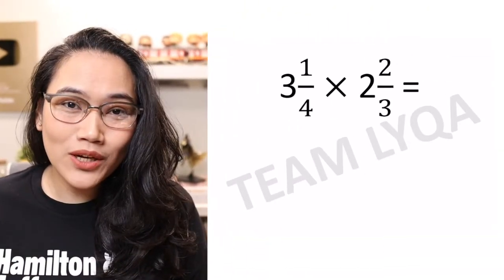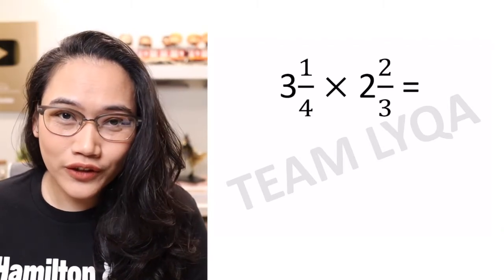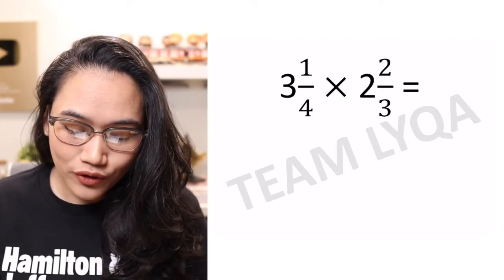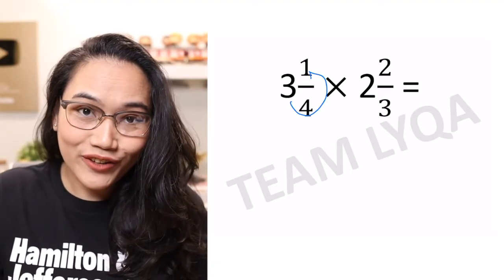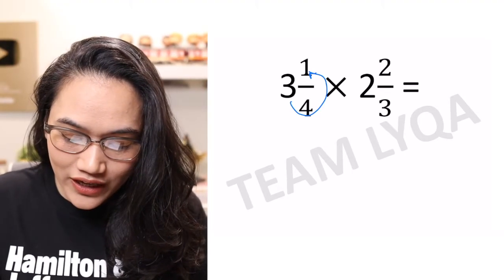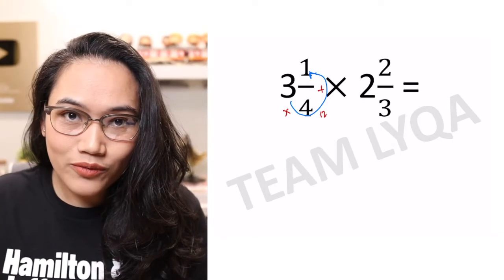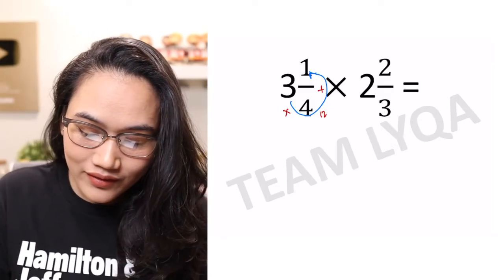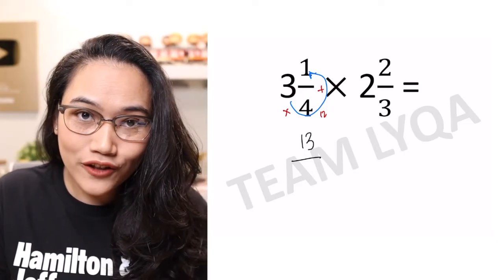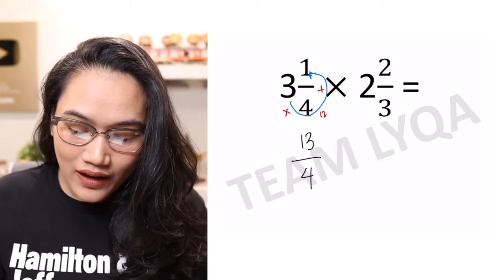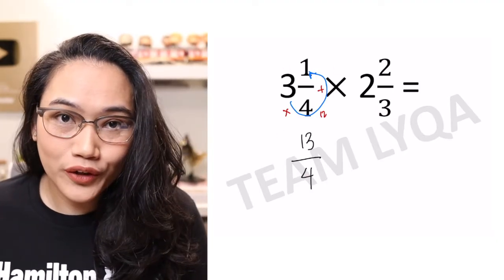When multiplying mixed numbers, the first thing we need to do is to transform them into improper fractions first. So if you have 3 and 1 fourth, we'll convert it. 3 times 4 which is 12, plus 1 which is 13. That would make 13 over 4 — we just copy the denominator which is 4. So 3 and 1 fourth is 13 over 4.